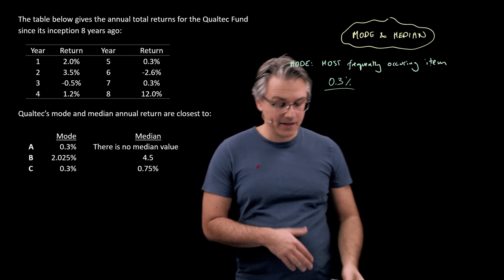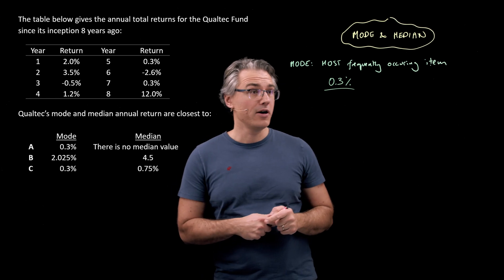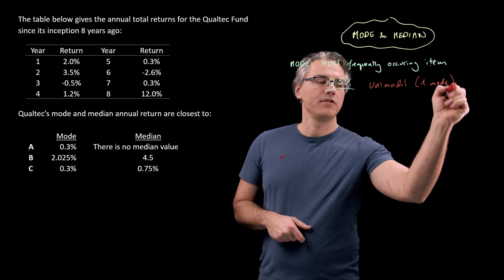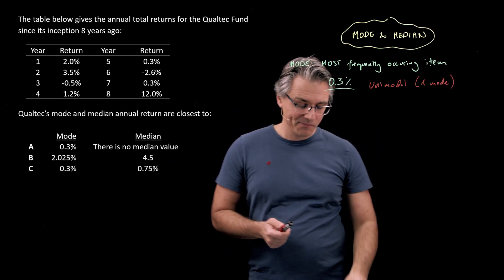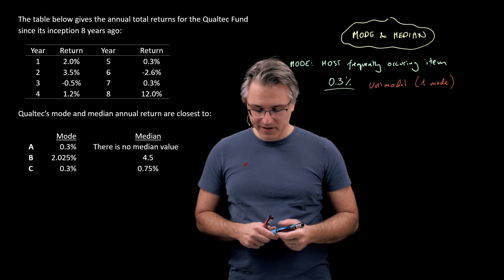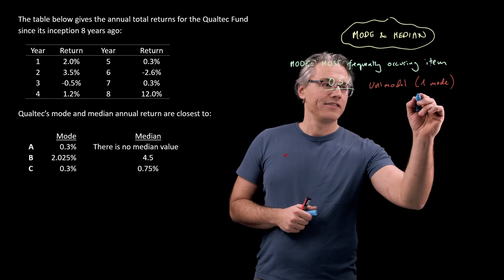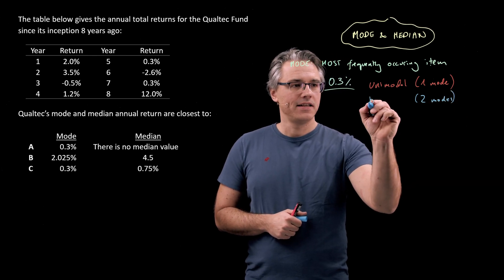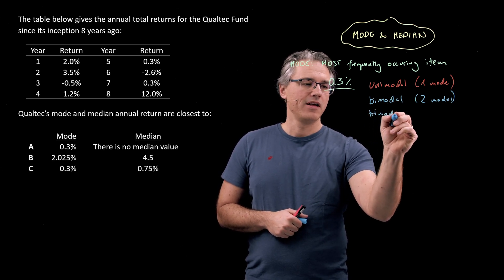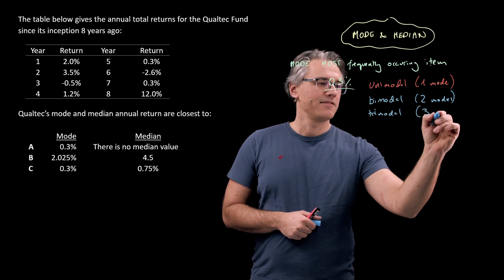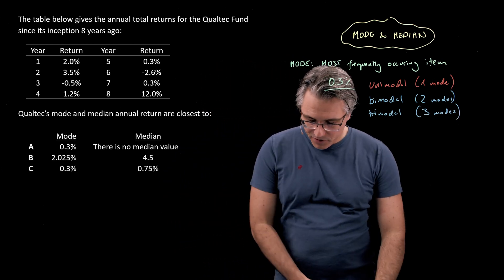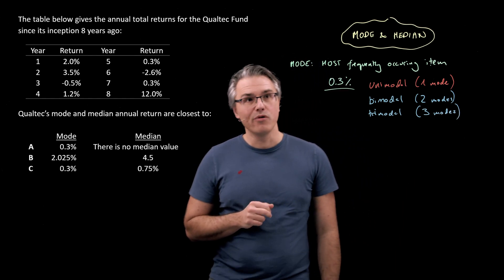Now, this makes the data here unimodal because it has a single mode - one mode, one most frequently occurring item. But if you've got a data set in which there is more than one mode, more than one item appears as frequently as the next one, then if it's got two modes you would say that the data is bimodal, or even something like trimodal, which is basically that it has three modes, three most frequently occurring items. So this is relatively easy to identify, but just be aware of the fact that there may be more than one mode indeed.